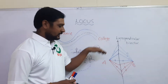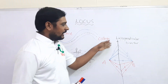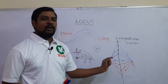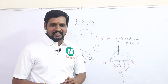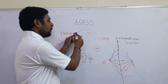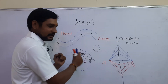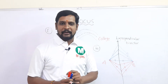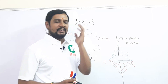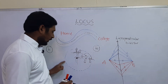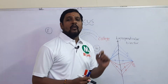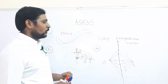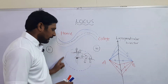Now I am going to reveal the definition of locus. What we said — the path from home to college, the animal which moved around the tree, or the line formed from AB having equal distance — these are all locus. The definition is: the set of points which satisfies a given geometrical condition is called locus.